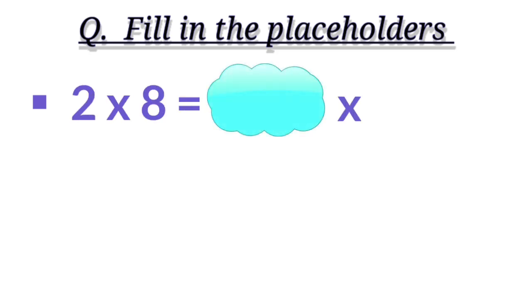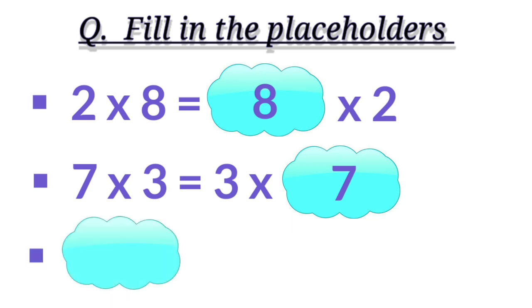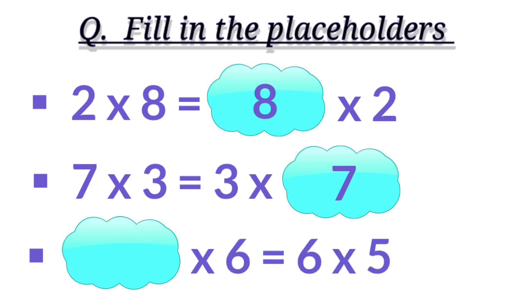Next question: two multiplied by eight equals to dash multiplied by two. Children, two multiplied by eight is same as eight multiplied by two. So what is the missing number? That's right, eight is the missing number. Next: seven multiplied by three equals to three multiplied by dash. What is the missing number? Very good — seven is the missing number. Last question: dash multiplied by six equals to six multiplied by five. What is the missing number? Very good, five is the missing number.